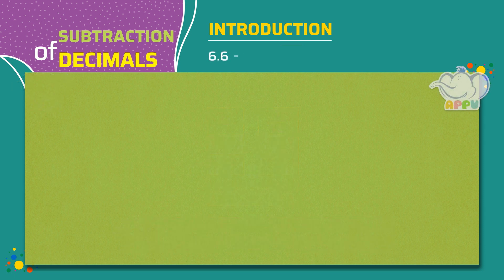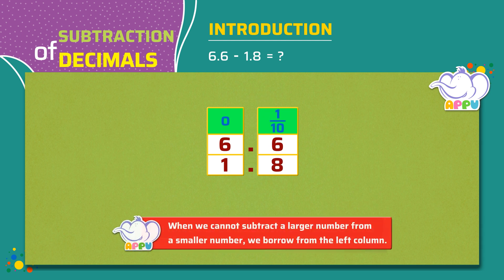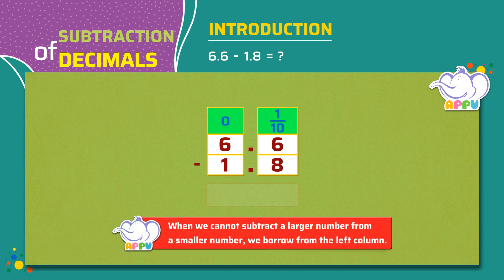What is 6.6 minus 1.8? We write the numbers in the place value chart. We write 6.6 as 6 ones and 6 tenths, and 1.8 as 1 ones and 8 tenths. So we borrow from the left column, which is the ones column.